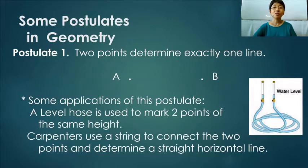Number one, two points determine exactly one line. Some applications of these postulates are a level hose, which is used to mark two points of the same height. And then the carpenters use a string to connect these two points and determine a straight horizontal line.